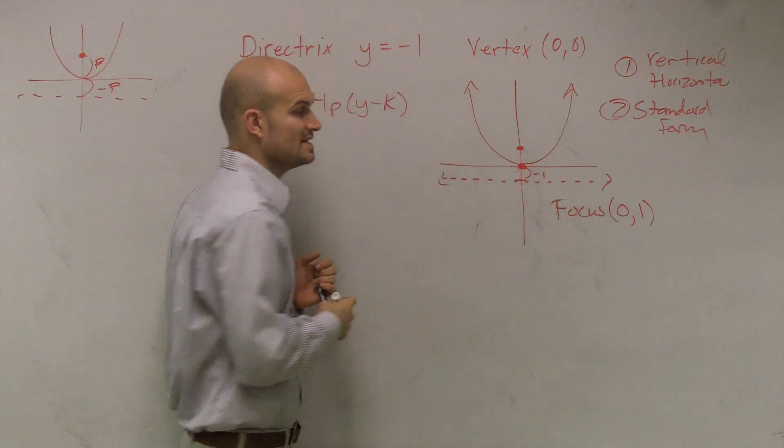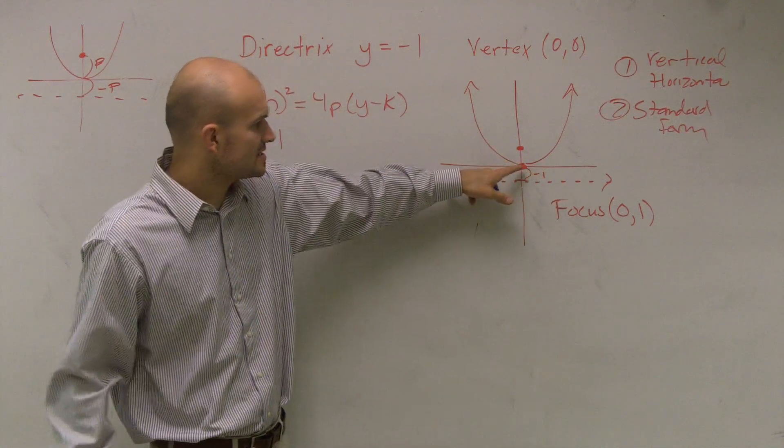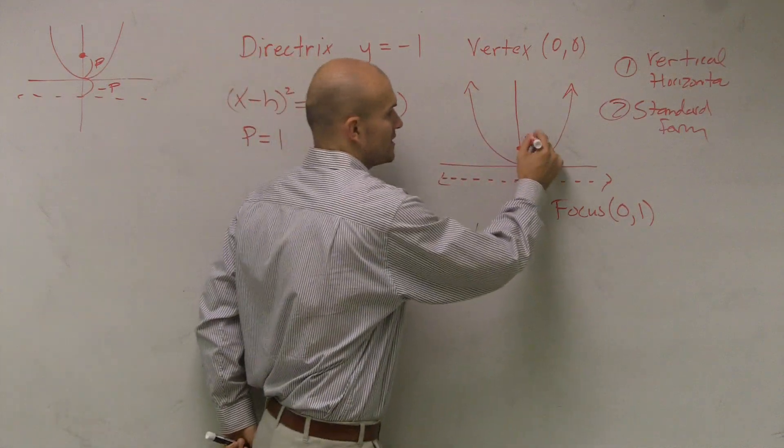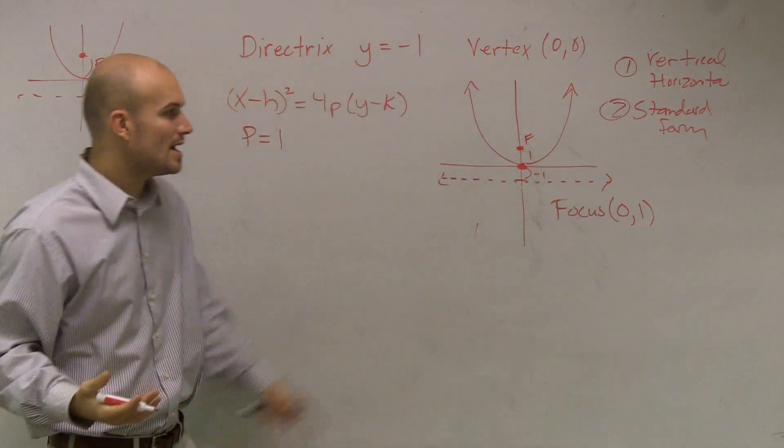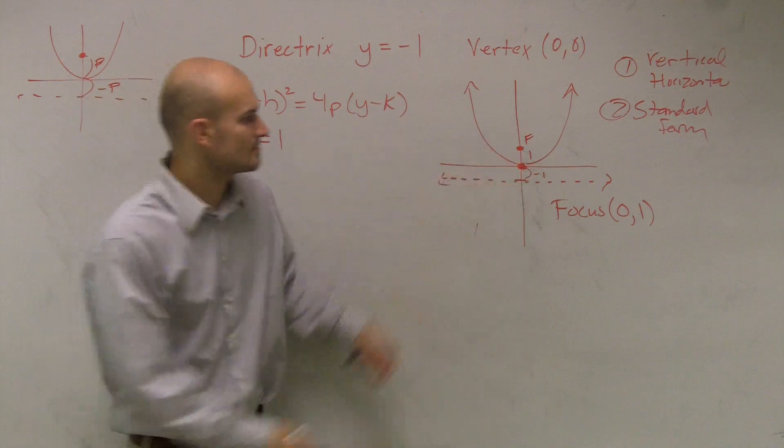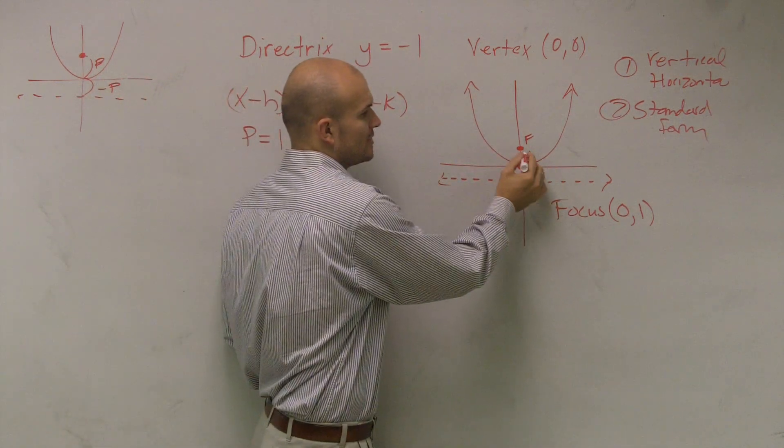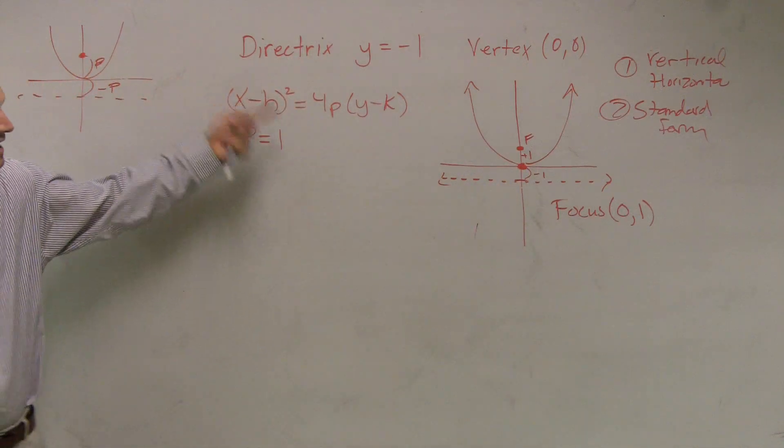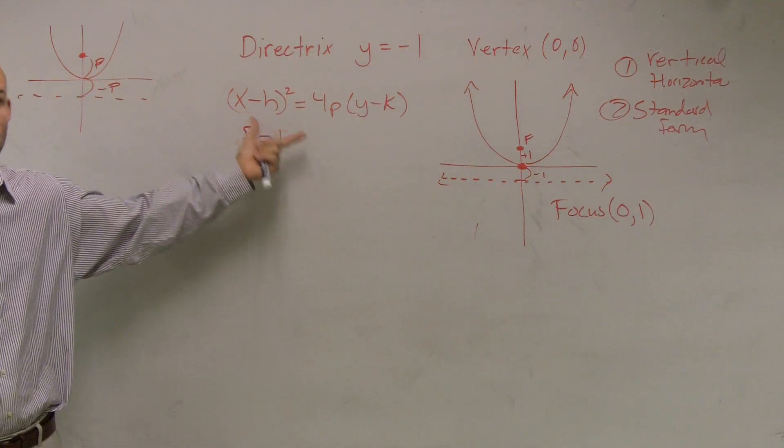Remember, the distance from your vertex to your directrix is the same as the distance from your vertex to your focus. What I'm doing is I'm adding 1 to get to your focus, and I'm subtracting 1 to get to my directrix. So therefore, I can determine that the value of p is 1.